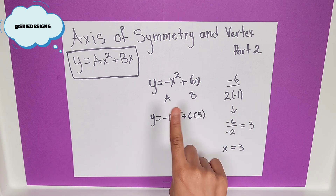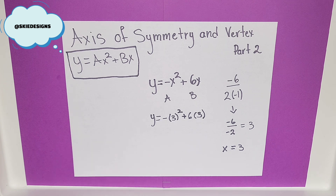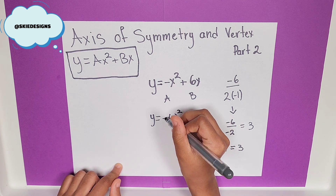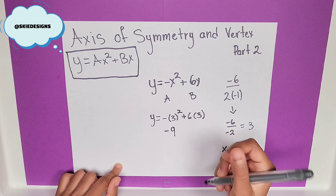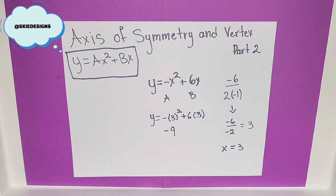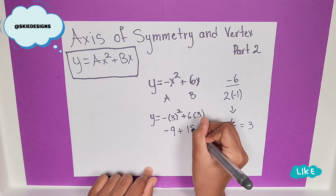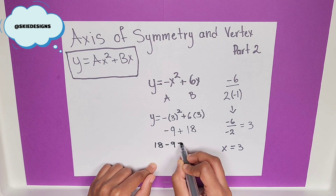Now, let's start with our ax squared. Have to remember PEMDAS: parentheses, exponent, multiplication. Since there's nothing else to do in the parentheses, we move on to the exponent. So, 3 squared is equal to 9, times negative 1, which is on the outside — this gives us negative 9. Now, we have 6 times 3. 6 times 3 is 18. So, negative 9 plus 18 — this is the same thing as 18 minus 9, which is equal to 9.